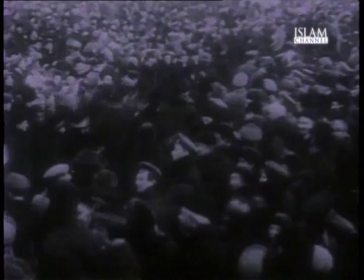Crowds chanting 'give us bread' were joined by striking women textile workers. The women struck partly to commemorate International Women's Day, but mainly to protest at the lack of bread. The Tsar told the commander of the Petrograd military district: 'I command you tomorrow to stop the disorders in the capital, which are unacceptable in the difficult time of war with Germany and Austria.' Some soldiers obeyed the order to suppress the demonstrations, but many mutinied and joined the revolution. The government resigned and eventually the Tsar had to concede that his entire apparatus of political and military power had been overwhelmed by the revolution. On 13 March he abdicated, ending the 300-year rule of the Romanov dynasty.